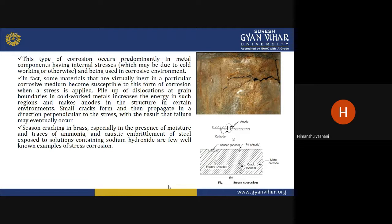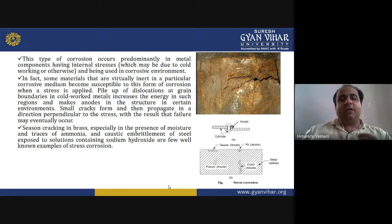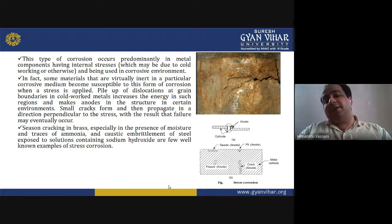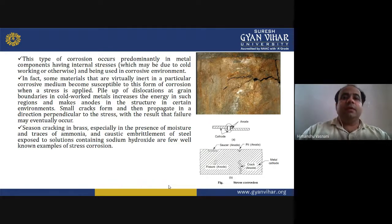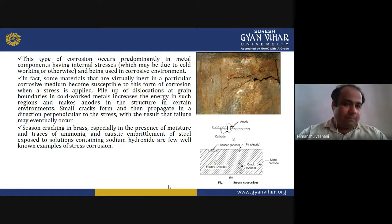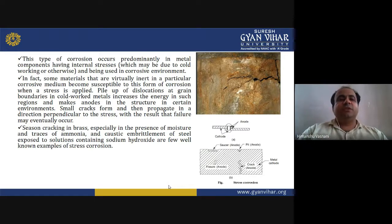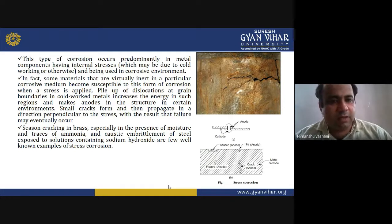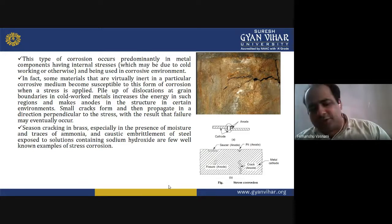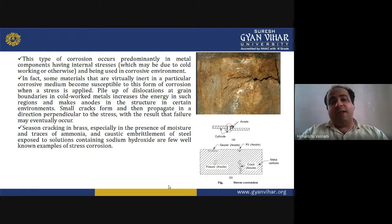Some materials that are virtually inert in a particular corrosive medium become susceptible to this form of corrosion when a stress is applied. Pile-up of dislocations at grain boundaries in cold-worked metals increases the energy in such regions, making those areas anodic. In certain environments, small cracks form and propagate in a direction perpendicular to the stress, and failure may eventually occur.